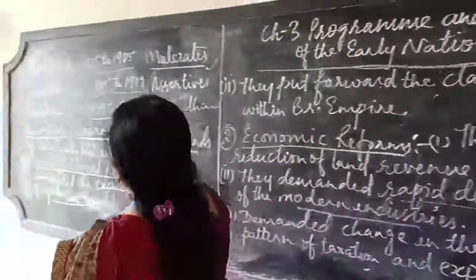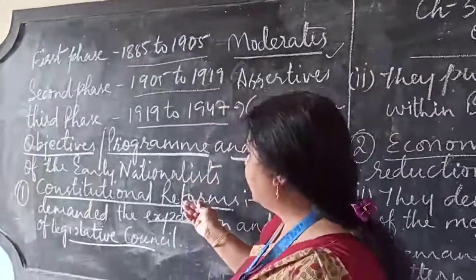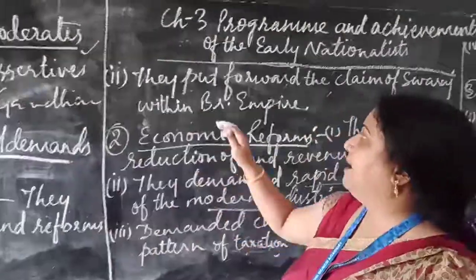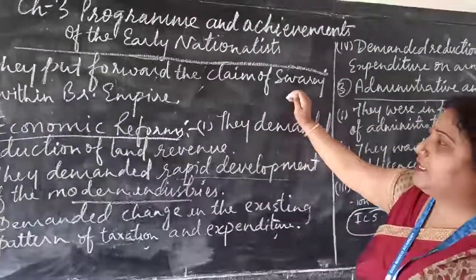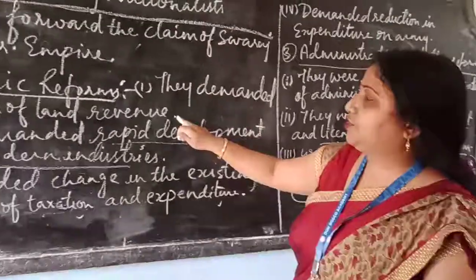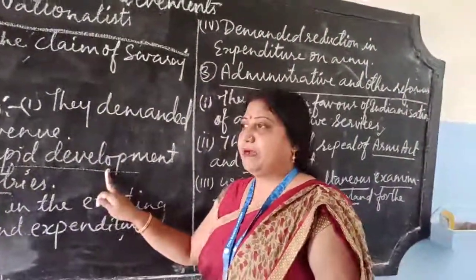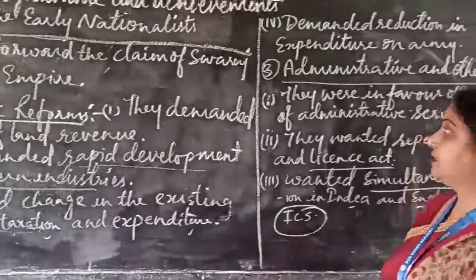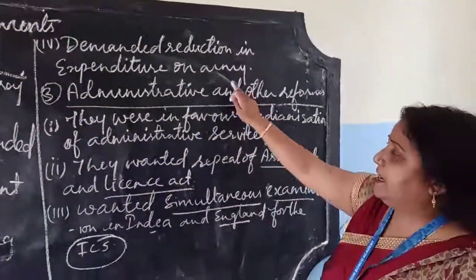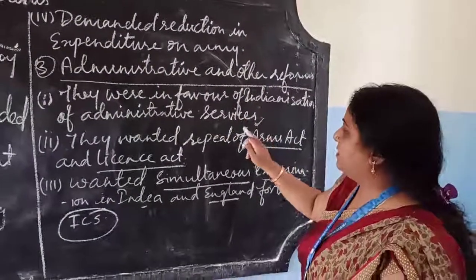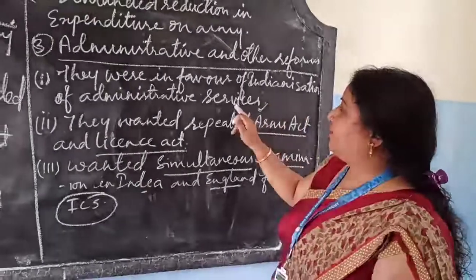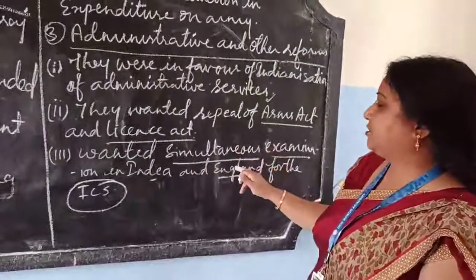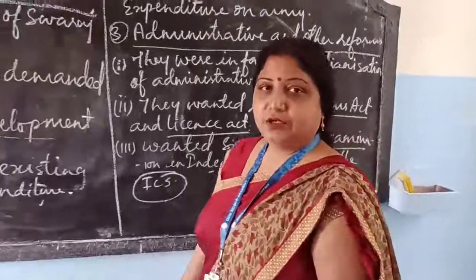So today we studied the program and demands of the early Nationalists: constitutional reforms including expansion of the legislative council and the claim of Swaraj; economic reforms including reduction of land revenue, rapid development of modern industries, changes in taxation and expenditure, and reduction in army expenditure; administrative reforms including Indianization of administrative services. Please learn these points.